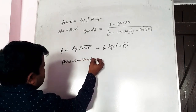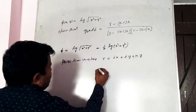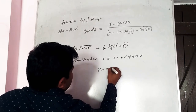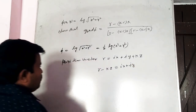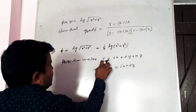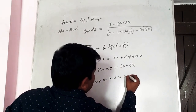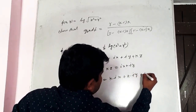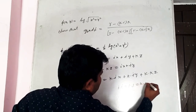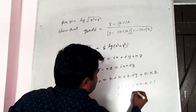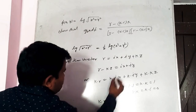Position vector r⃗ = ix + jy + kz. So r⃗ − kz = ix + jy. k·r⃗ = k·(ix + jy + kz). Since k·i = 0, k·j = 0, and k·k = 1, we get k·r⃗ = z.